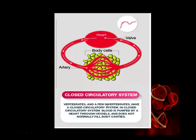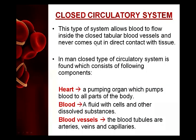That is why this is called the closed type circulatory system. This system is present in vertebrates and a few invertebrates like the earthworm, which belongs to phylum Annelida. The closed type circulatory system is one in which blood flows inside closed tubular blood vessels and never comes out in direct contact with the tissues. It is composed of three main components: heart, blood, and blood vessels.